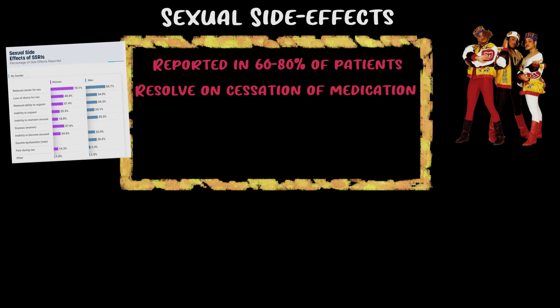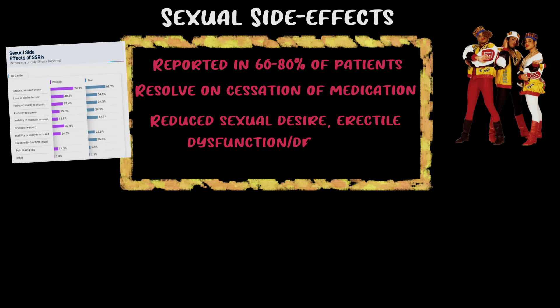Sexual side effects include three major categories: reduced desire for sex, difficulty maintaining arousal — translating to erectile dysfunction in men or vaginal dryness in women — and significantly increased difficulty achieving orgasm. One way to conceptualize how SSRIs work: they take the joy from your genitals and put it into your brain.